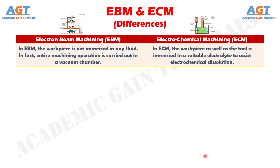Number 6: In electron beam machining, the workpiece is not immersed in any fluid. In fact, the entire machining operation is carried out in a vacuum chamber, whereas in electrochemical machining, the workpiece as well as the tool is immersed in a suitable electrolyte to assist electrochemical dissolution.